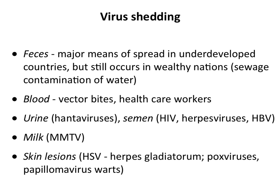Shedding happens in many other ways besides the respiratory tract. Virus can be shed in feces if replicating in the gut — a major route in countries without good sewer systems. Blood spreads infection through vector bites, IV drug use, or healthcare worker needle sticks. Urine spreads hantaviruses — you can inhale mouse urine. There was a Yosemite hantavirus outbreak where people camping in cabins inhaled dried mouse urine containing virus and developed a severe lung infection. Semen transmits HIV and other viruses. Mouse mammary tumor virus transmits through milk. And through the skin, herpes viruses, pox viruses, and papillomaviruses are transmitted — there's even a common infection among wrestlers transmitted by skin contact.